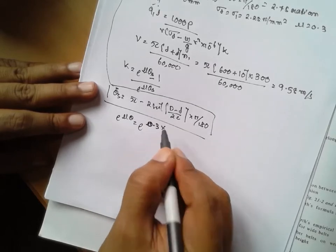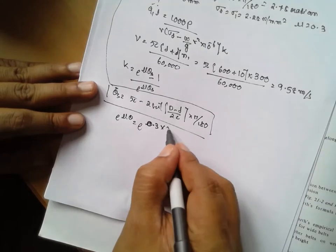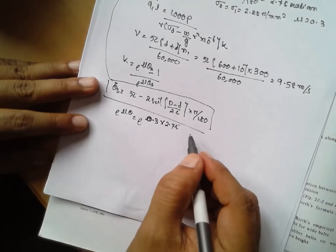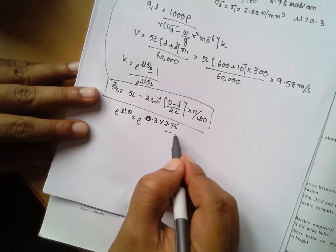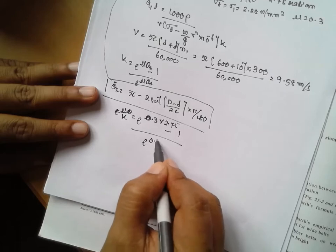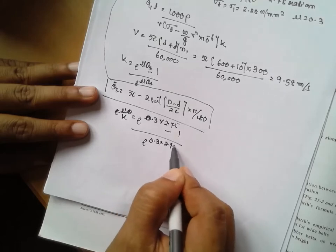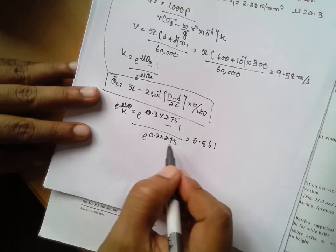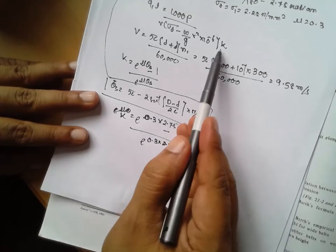2.75 minus 1 divided by e raised to 0.3 into 2.75. The answer will be 0.561. Directly I will solve it. Once you know k value, the w you have to assume.